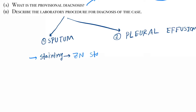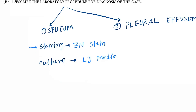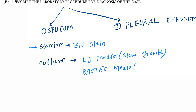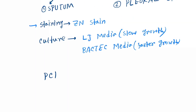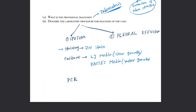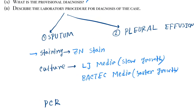Staining is done by Ziehl-Neelsen stain. The next method is culture, which uses two media: first is LJ media, and second is BACTEC media. In LJ media the growth will be slow, while in BACTEC media the growth is faster. We can also do PCR on the sputum sample.